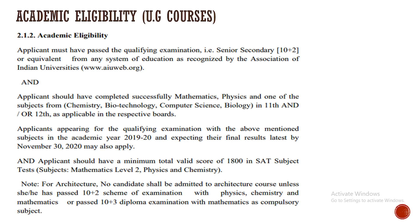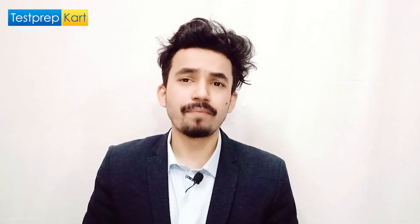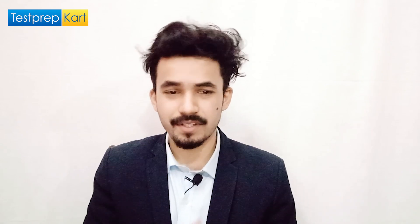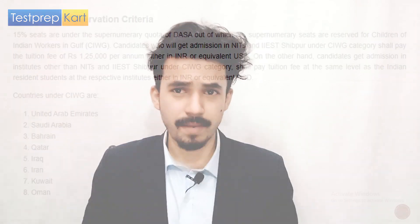Regarding academic eligibility for UG courses, you need to have cleared Class 12, also known as Plus 2. You must score a minimum of 60 to 65 percent marks in Mathematics and Physics — these are compulsory subjects — along with one subject from Chemistry, Biotechnology, Computer Science, or Biology. Additionally, your age should be less than 25 years.